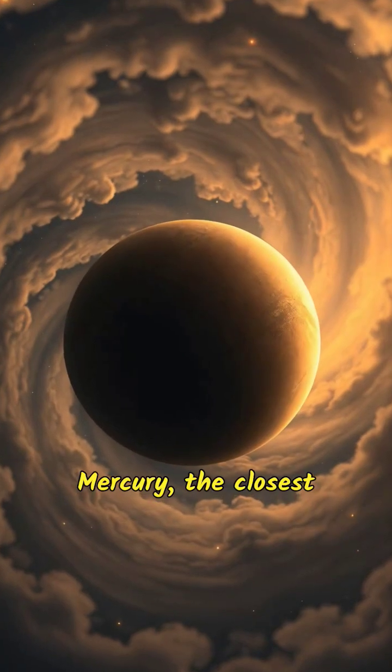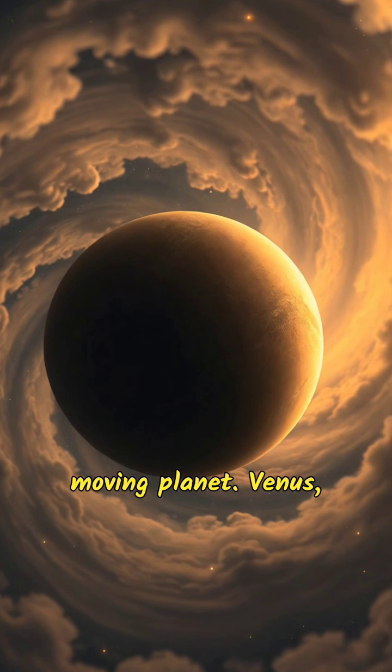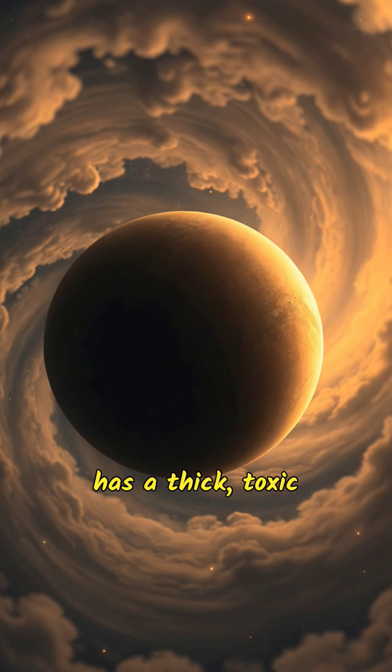Mercury, the closest planet to the Sun, is the smallest and fastest-moving planet. Venus, often referred to as Earth's sister planet, has a thick, toxic atmosphere and surface temperatures hot enough to melt lead.